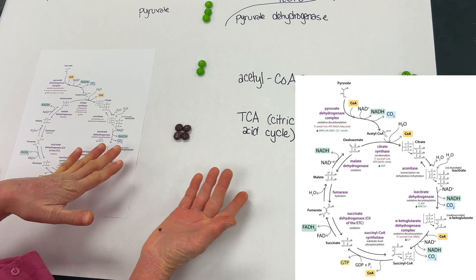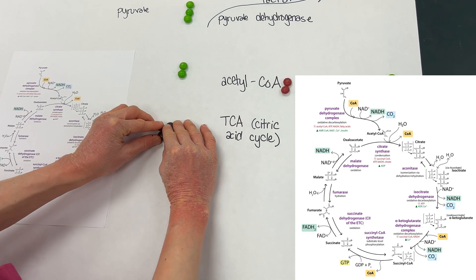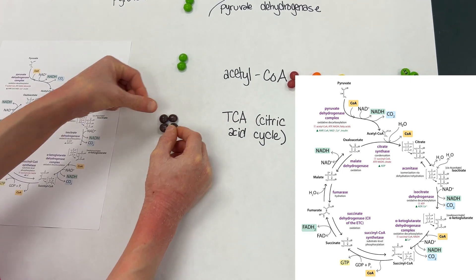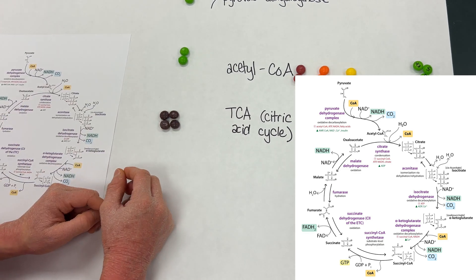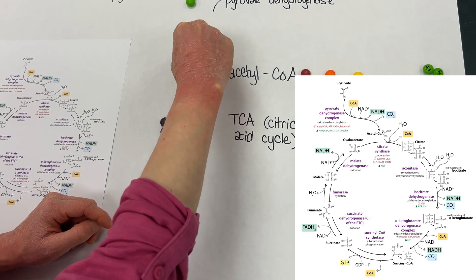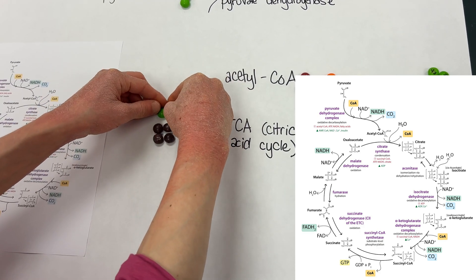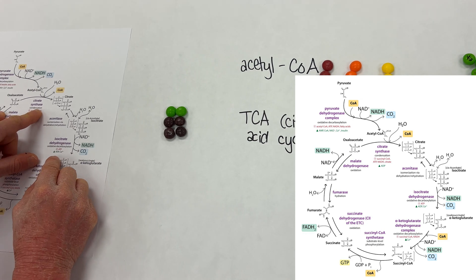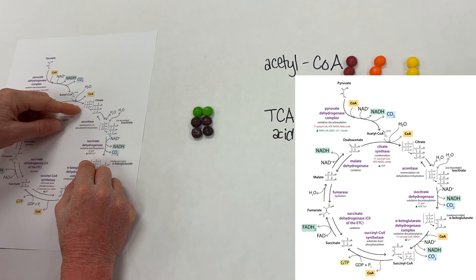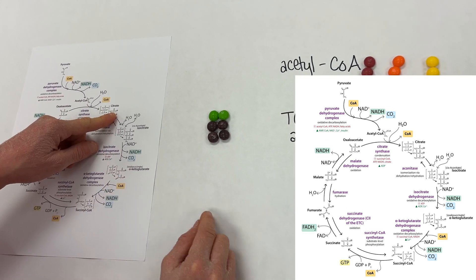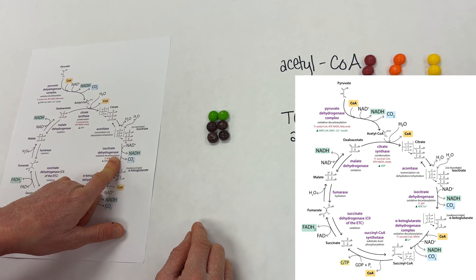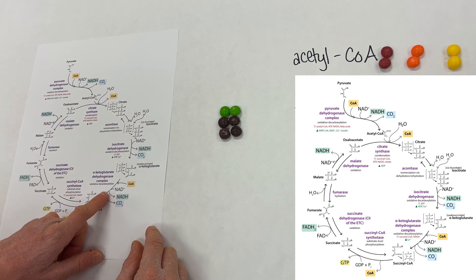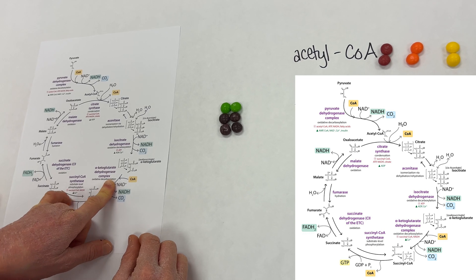To illustrate this, imagine that you have oxaloacetate, and we have it here so that these are the carboxylic acids. When acetyl-CoA comes in, it adds on top — that happens in our citrate synthase step. Now, if we think about where the CO2s are going to get lost, they're going to get lost at the isocitrate dehydrogenase step and at the alpha-ketoglutarate dehydrogenase step.